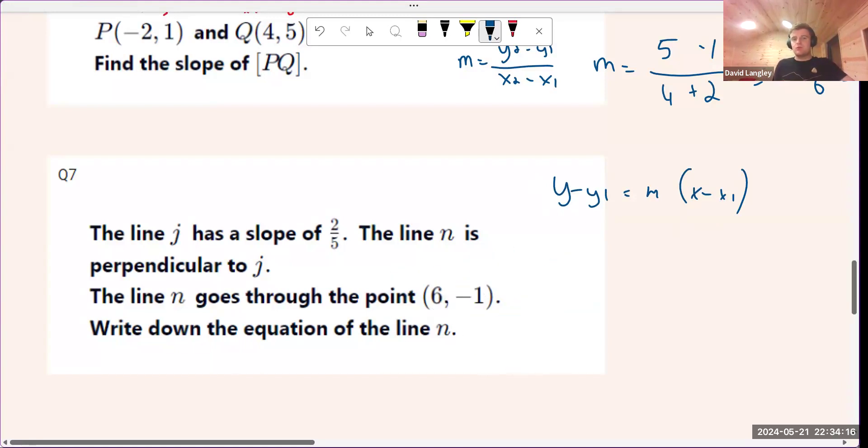We don't have that, but we have this information that 2 over 5 is the slope of a perpendicular line. What does perpendicular mean again? It means that it makes the right angle. How do you find the slope of a perpendicular line?